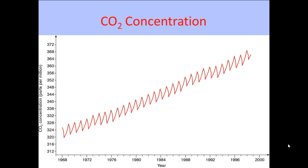This graph shows the changing CO2 concentration within the atmosphere, with the year along the bottom and carbon dioxide concentration along the side, measured in parts per million. The overall trend of the line appears to be going up, and this has been the case for at least the last 50 years. However, you will notice a zigzag effect throughout the line.